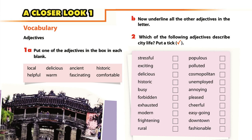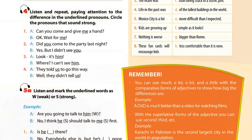Unit 2, Page 19: A Closer Look 1 — Pronunciation. Activity 4. Listen and repeat, paying attention to the difference in the underlined pronouns. Circle the pronouns that sound strong.